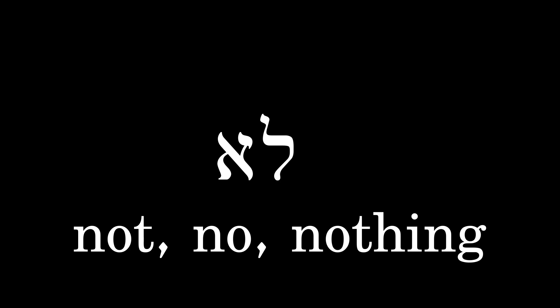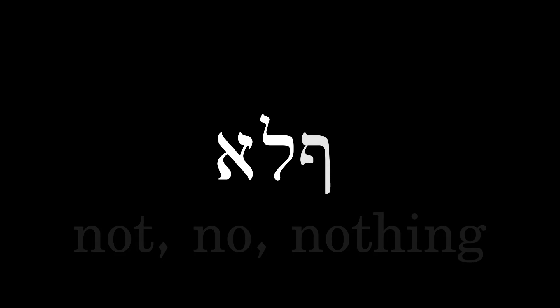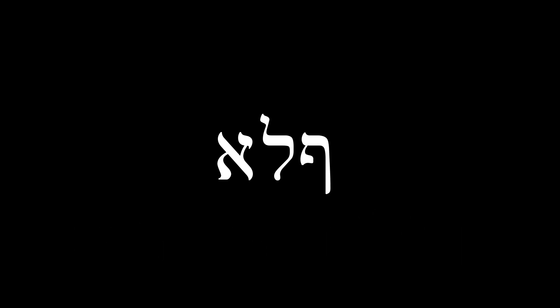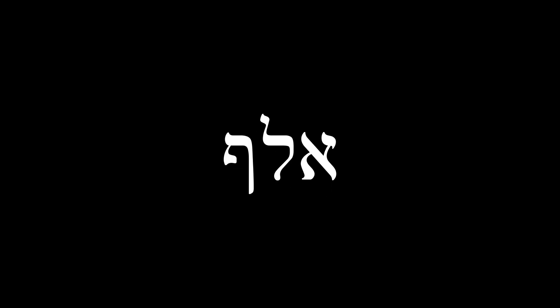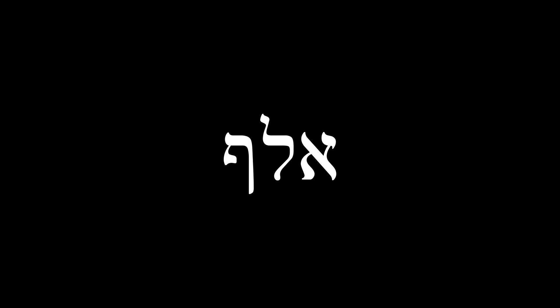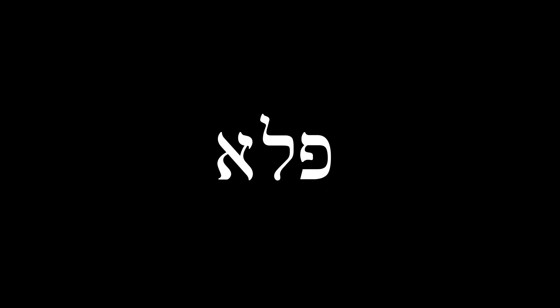This is our off, or zero. The Peh, now at the beginning of the word, changes form to a closed mouth. We went from power with an open mouth to nothing with a closed mouth.